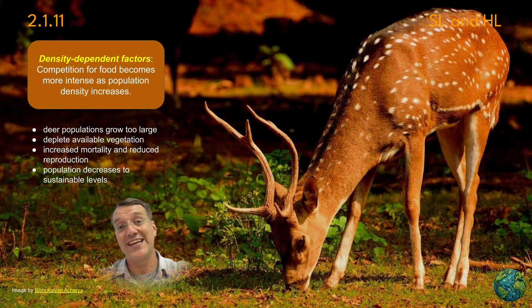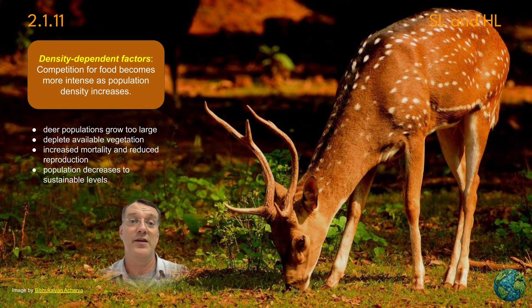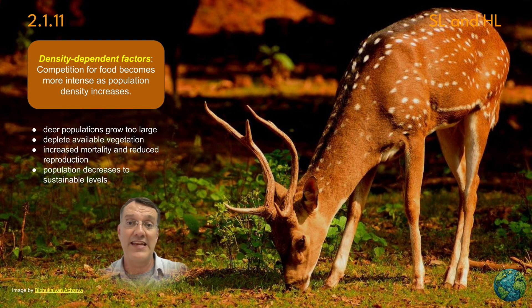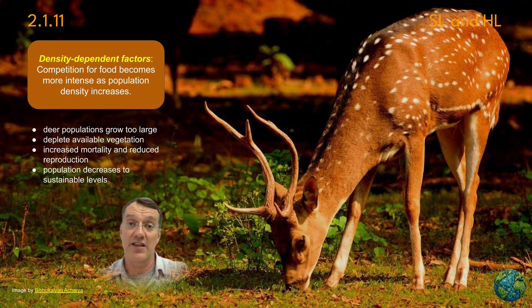Competition for food intensifies as population density increases. This is exemplified by deer populations: as the deer population grows, they all try to eat the same kinds of plants. Those plants have a harder time reproducing and growing, which means there's less food available for the deer — the deer population then gets stressed, with greater mortality and less successful reproduction.